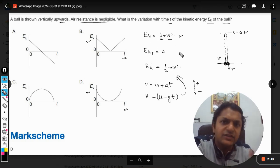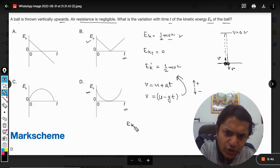And this we can substitute here and we can find the variation of kinetic energy with respect to time. So I can say now, just cutting it short, Ek is directly proportional to v squared.